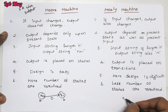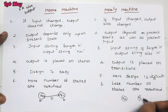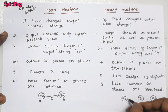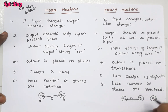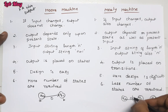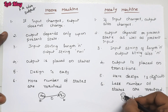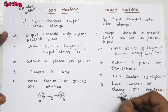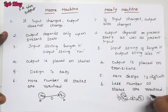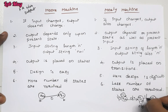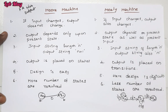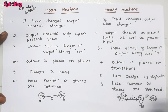Because in Mealy machine, if we are in q0, q1, and q2, then from q0 with input 0, the output is 'a'; from q0 with input 1, the output is 'y'; and from q1 with input 1, the output is 'b'. So each and every transition, for each and every input symbol, there is a separate output in Mealy machine.